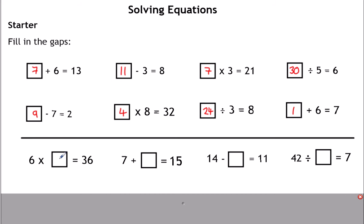Now the ones under the line are a little bit different. 6 times something is 36 — you can swap that around and divide: 36 divided by 6 is 6. 7 add something is 15 — swap around: 15 take away 7 is 8. These last two don't quite work the same. 14 take away something is 11 — the easiest way is to do 14 take away 11, so swap them places and you get 3. And 42 divided by something is 7 — do 42 divided by 7, and the answer is 6. Those last two don't necessarily match the pattern of the ones above where the general rule was just working in reverse.